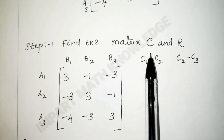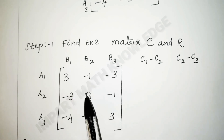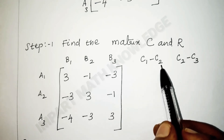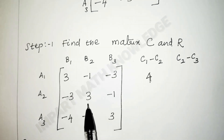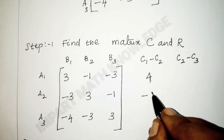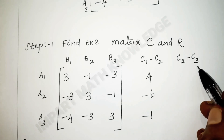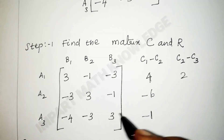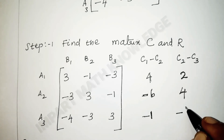Step 1: find the row matrix and column matrix. For the column matrix, we take the difference between column 1 and column 2, then column 2 and column 3. C1 minus C2: 3 minus (−1) = 4; −3 minus 3 = −6; −4 minus (−3) = −1. C2 minus C3: −1 minus (−3) = 2; 3 minus (−1) = 4; −3 minus 3 = −6.